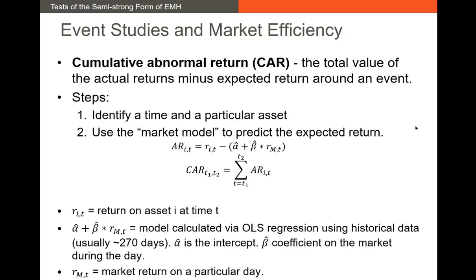So that's anomalies and how they relate to market efficiency. We do see that most of these anomalies disappear, but there are some anomalies that persist, and that kind of runs contrary to the efficient markets hypothesis. Another way we can determine what level of market efficiency exists is through the use of CARs, or Cumulative Abnormal Returns.